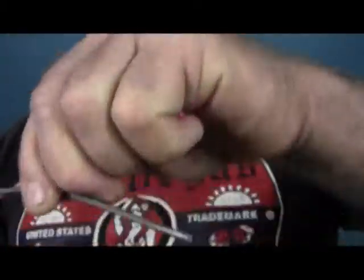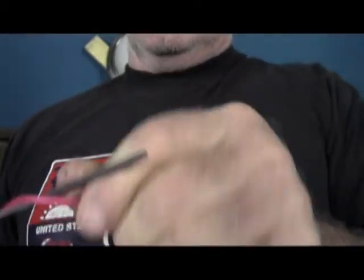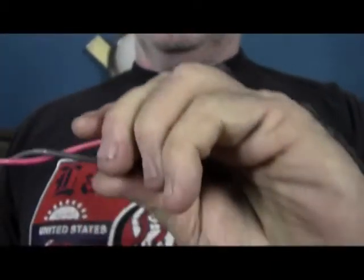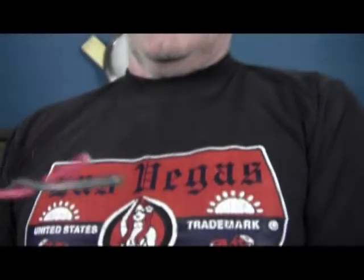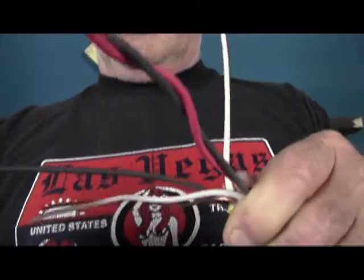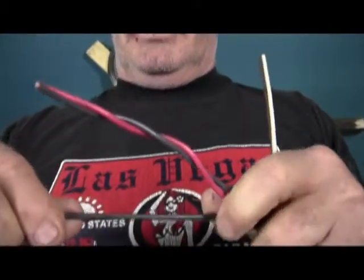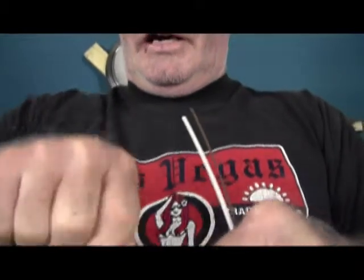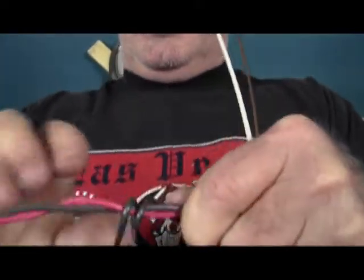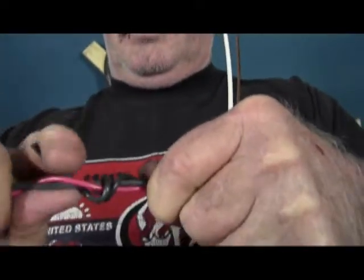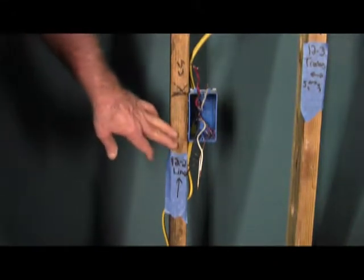These are typically twisted together so you don't get confused when you go to install the switch. This can be a line or load and you traditionally twist it around the wire. We're at the first three-way switch which is where the power comes in.